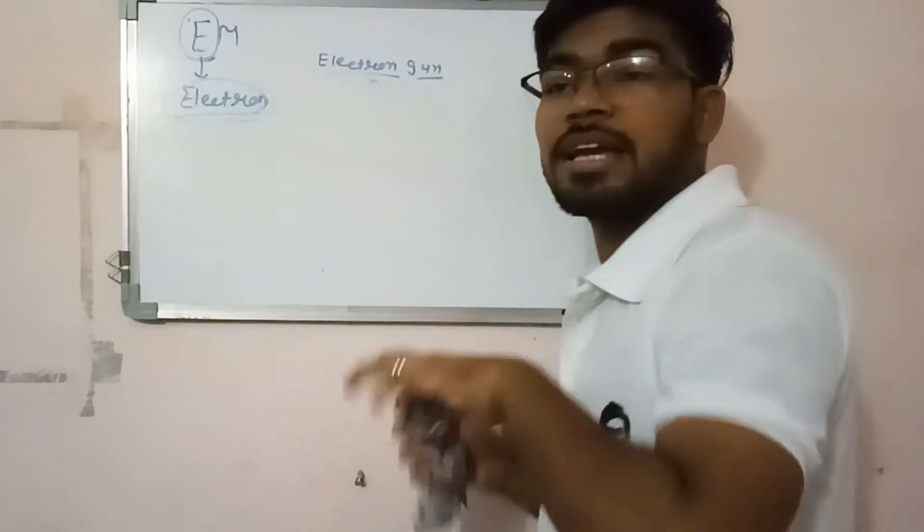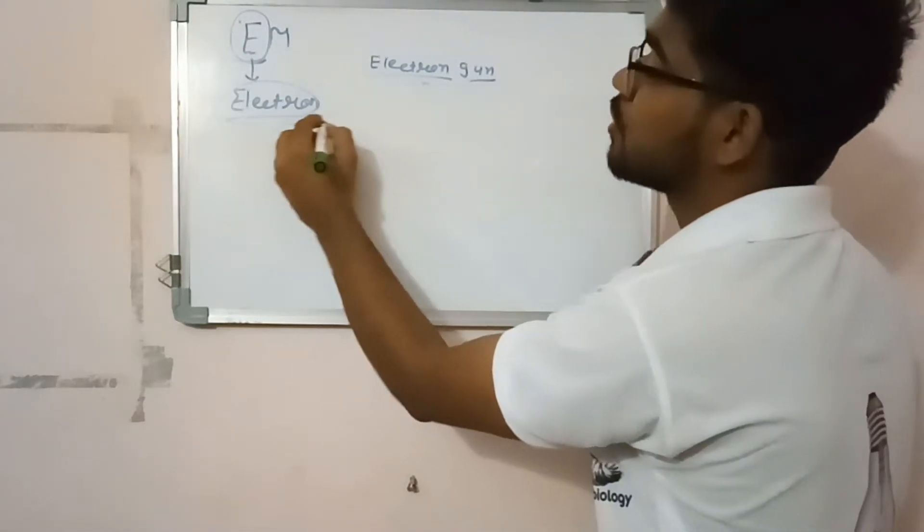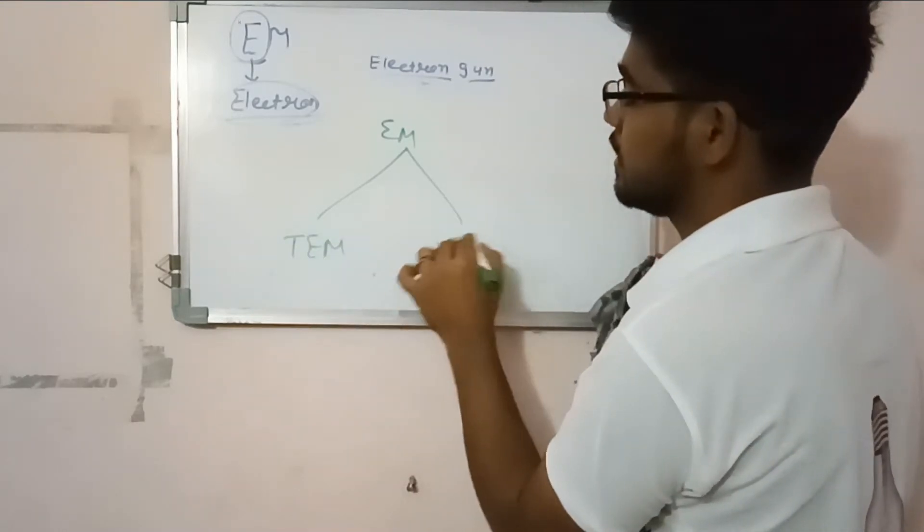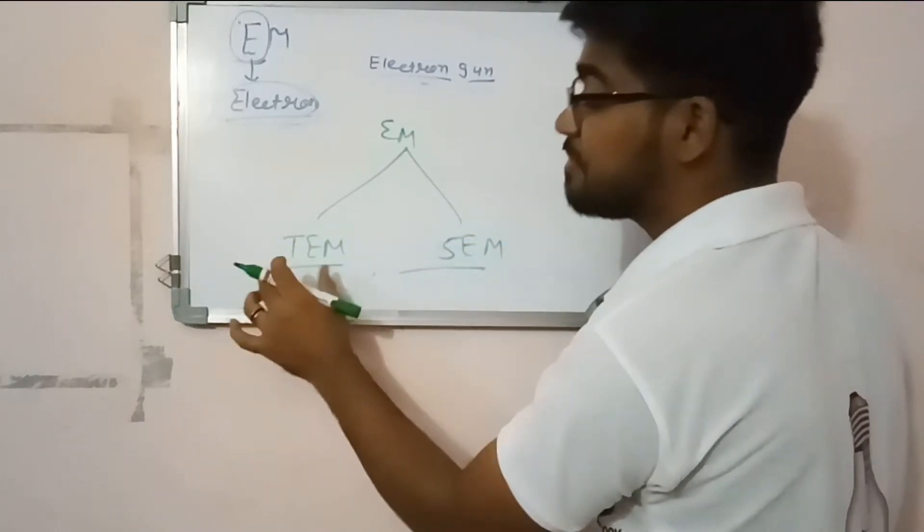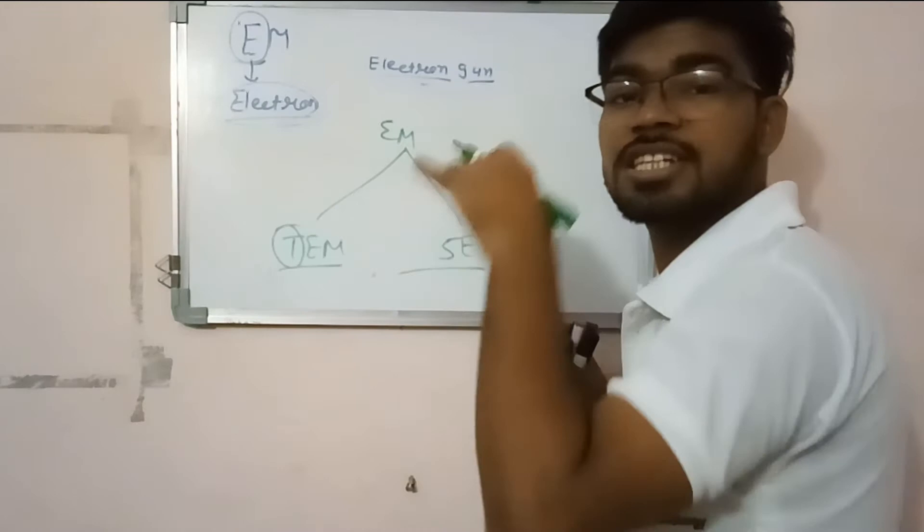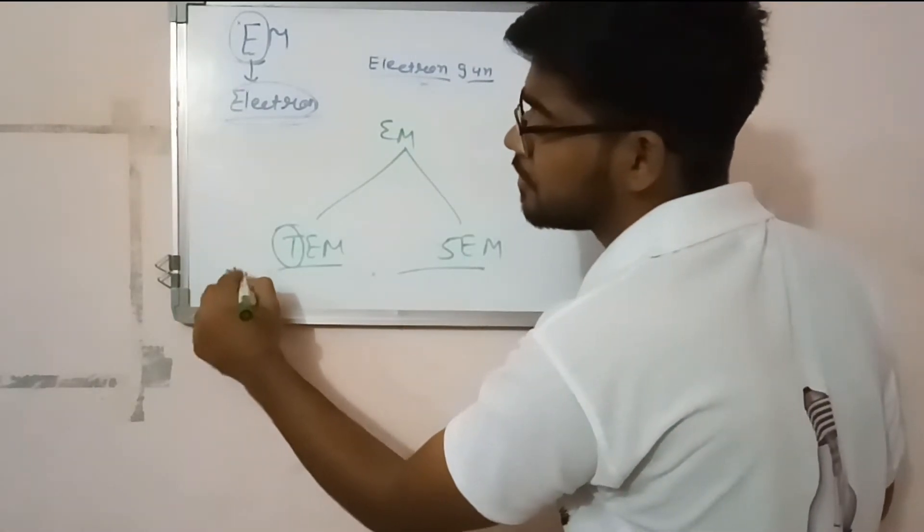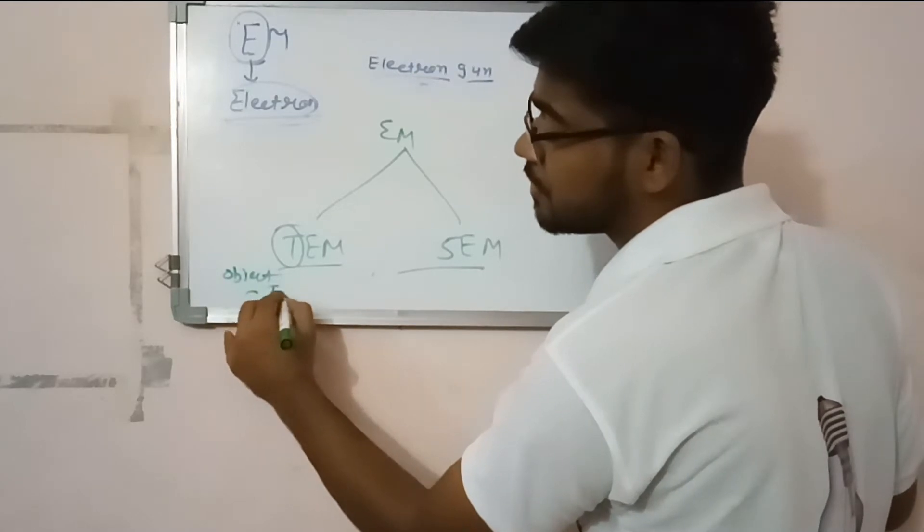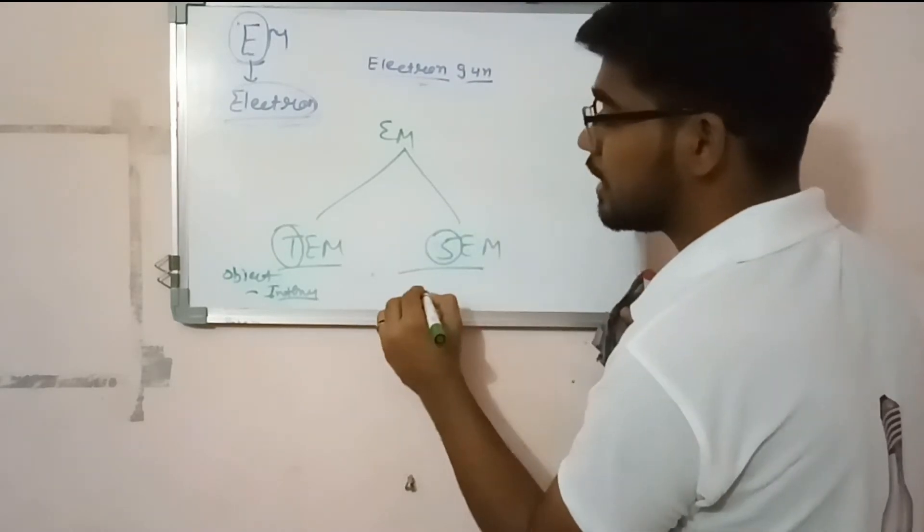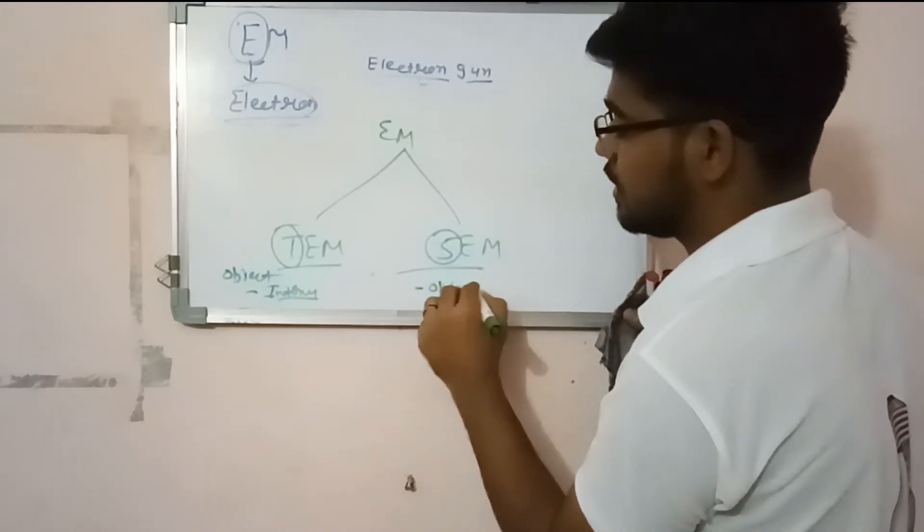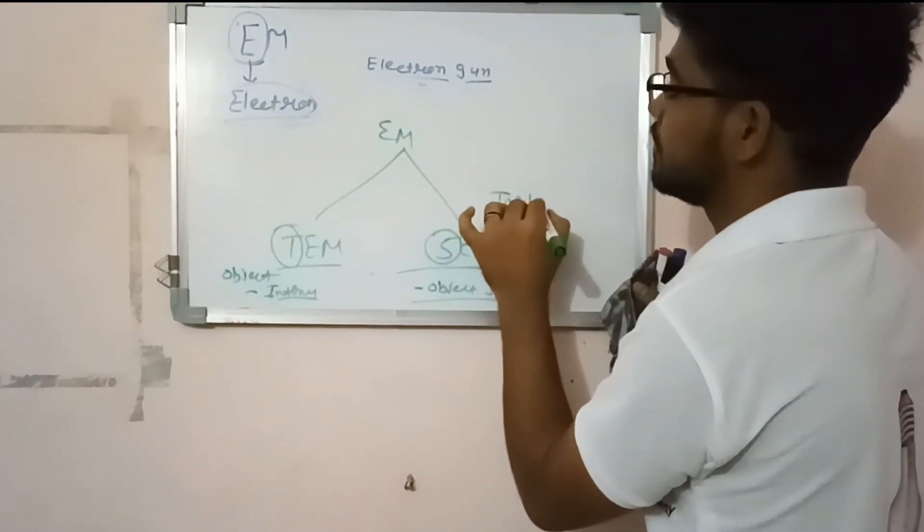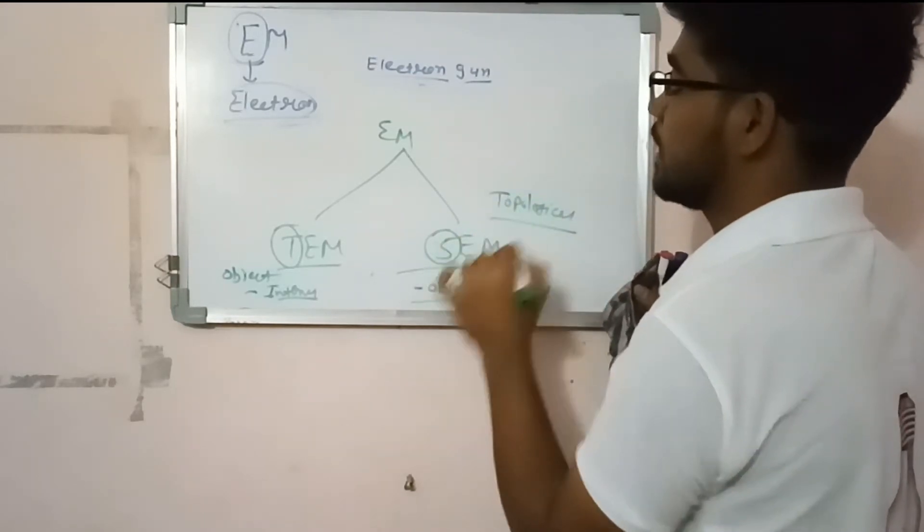The electron microscopy has two types: TEM and SEM - Transmission Electron Microscopy and Scanning Electron Microscopy. In transmission, electrons are transmitted through the object, so internal structure is observed by TEM. In SEM, the object is scanned, so only the outer area or topological area and shape is observed.